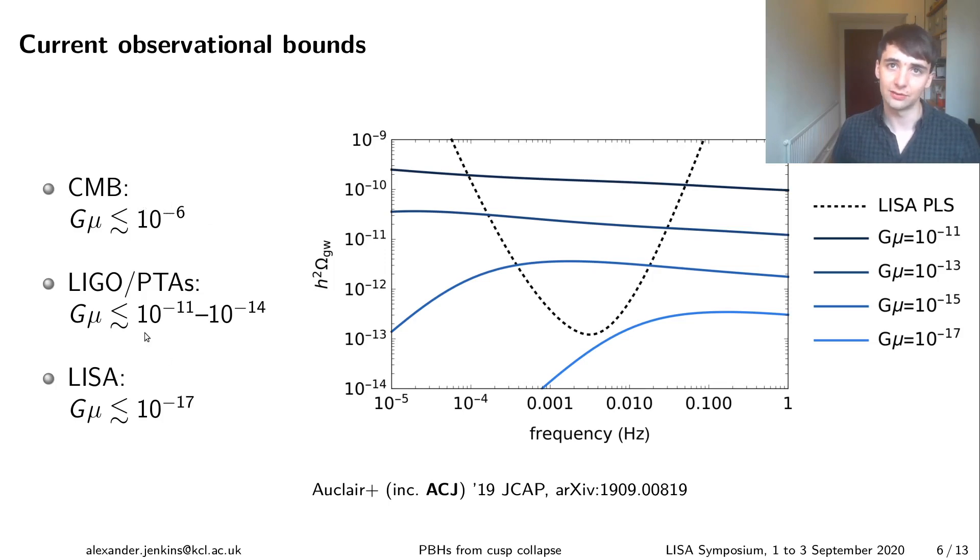So that CMB constraint typically gets you Gμ is less than around the GUT scale but we can do a lot better with gravitational waves. So with LIGO and with PTAs you get constraints sort of between 10^-11 and 10^-14. There's a lot of variation there and that's because this depends quite sensitively unfortunately on the details of the loop network model. So essentially how many loops there are of different sizes.